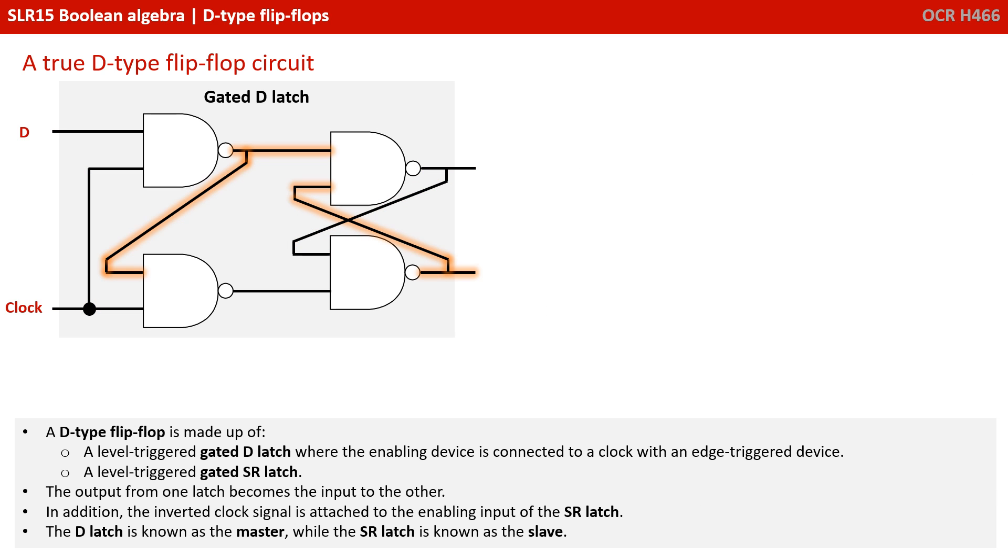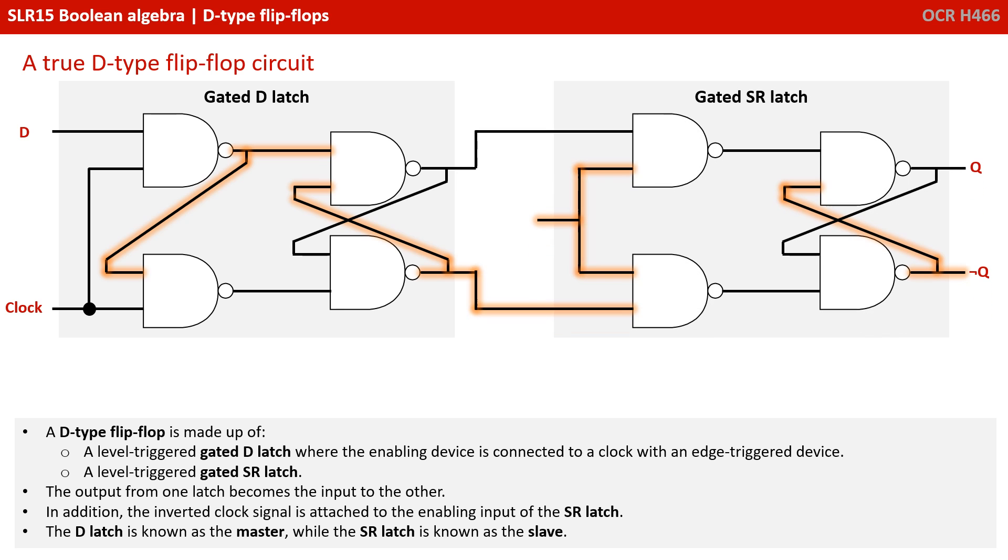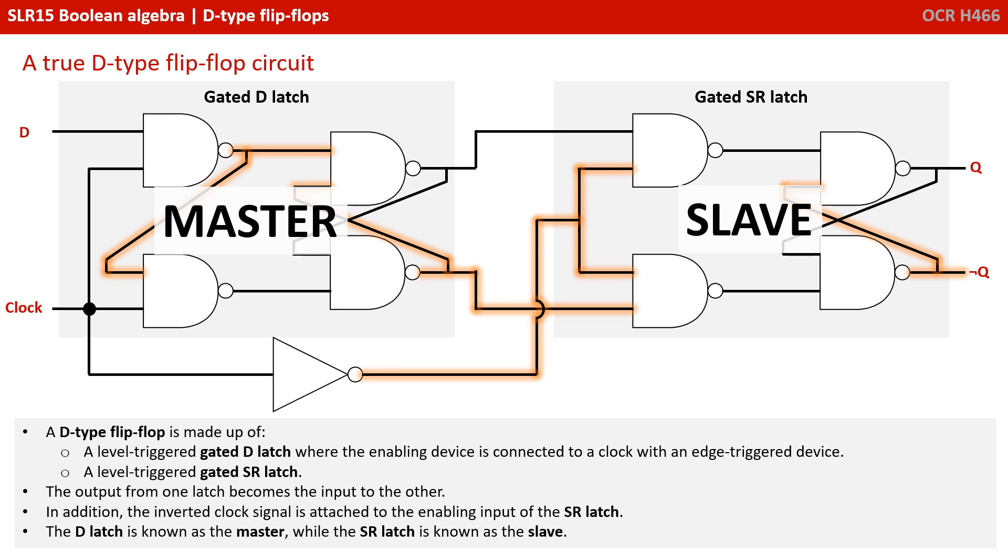A D-type flip-flop is made up of a level-triggered gated D-latch where the enabling device is connected to a clock with an edge-trigger device, and a level-triggered gated SR-latch. The output from one latch becomes the input to the other. In addition, the inverted clock signal is attached to the enabling input of the SR-latch. The D-latch is known as the master, while the SR-latch is known as the slave.